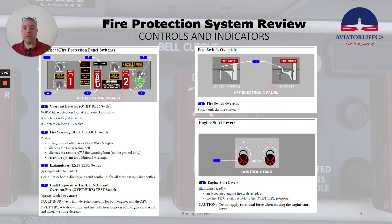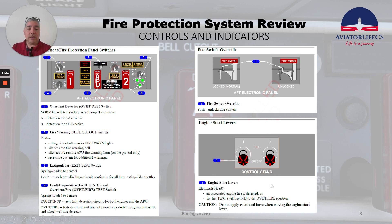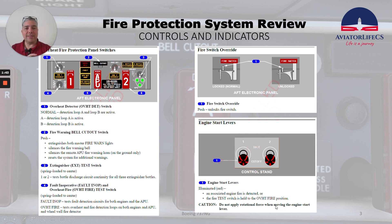We have the overheat and fire protection panel switches located in the AFE electronic panel. We have the fire switch override for the engines and APU — this is how you override the switch. We push the switch and it unlocks the fire switch. Some airplanes have the engine start levers. When they are illuminated red, it means an associated engine fire is detected or the fire test switch is held to the overheat/fire position. Caution: do not apply rotational force when moving the engine start lever.